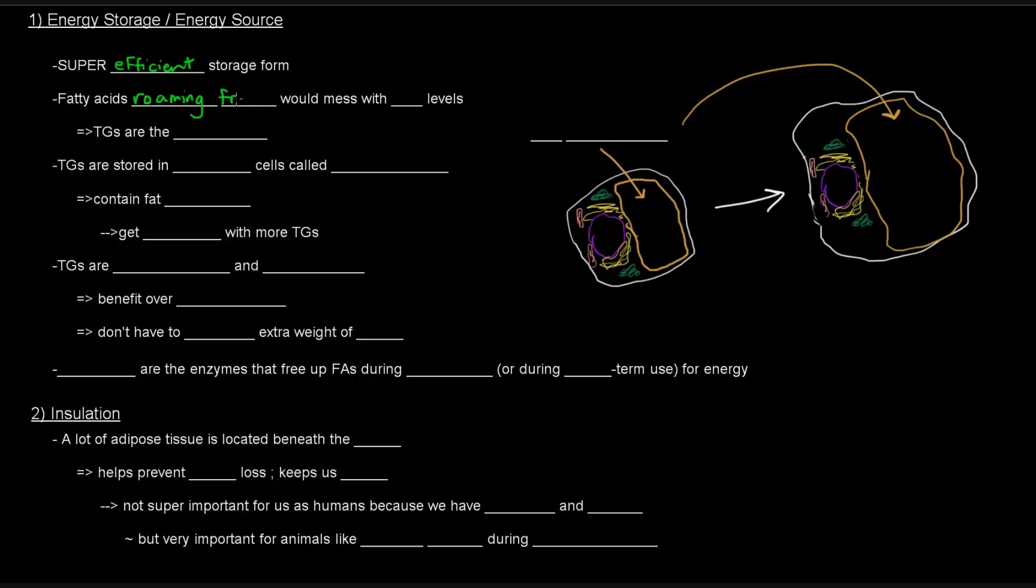Now, fatty acids, if they were roaming freely, if we have free fatty acids, they would mess with pH levels because they're acidic. Fatty acids are acids. So, we don't want fatty acids to be roaming freely. They would mess up the pH levels. We don't want that.